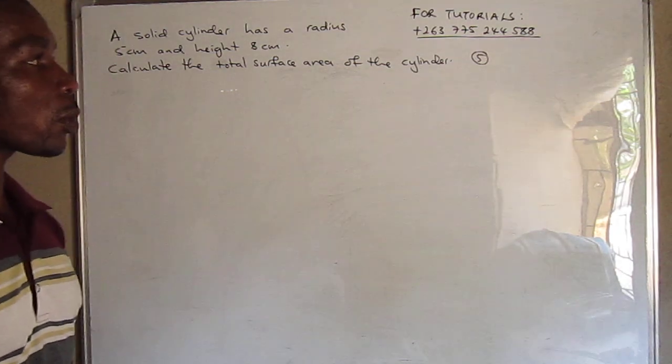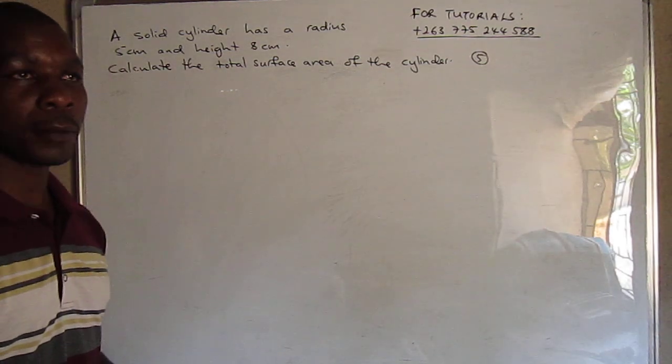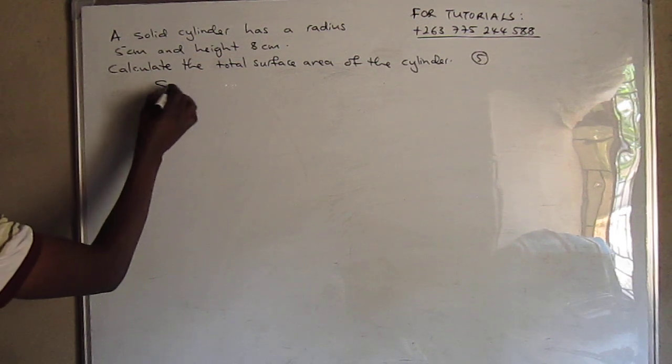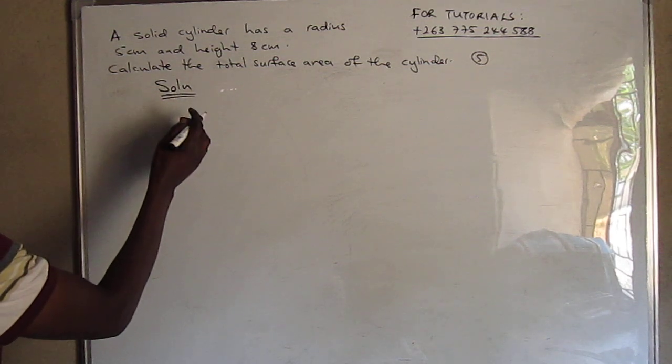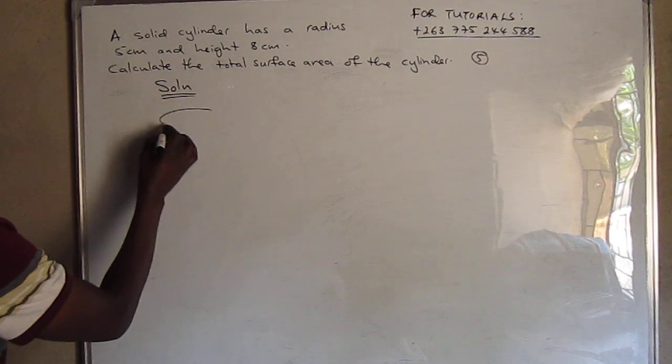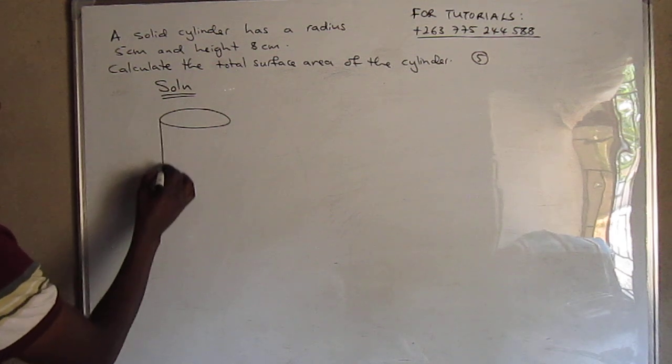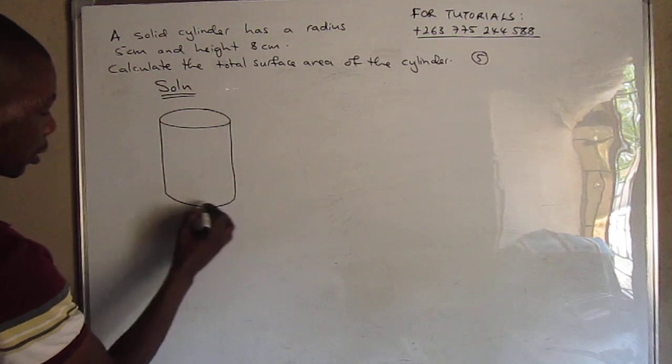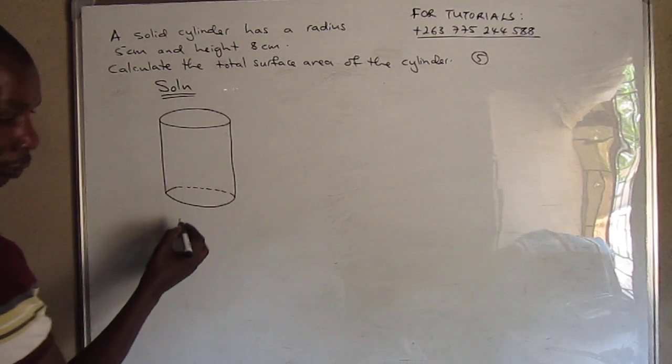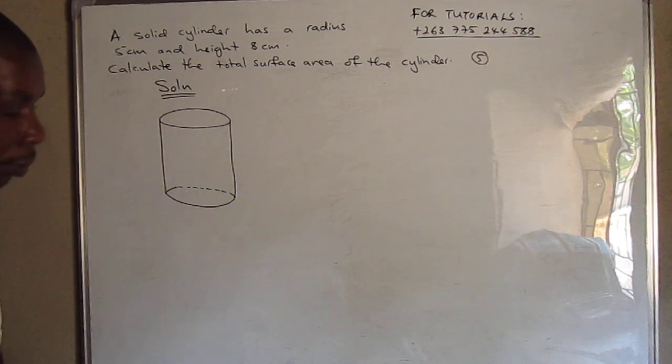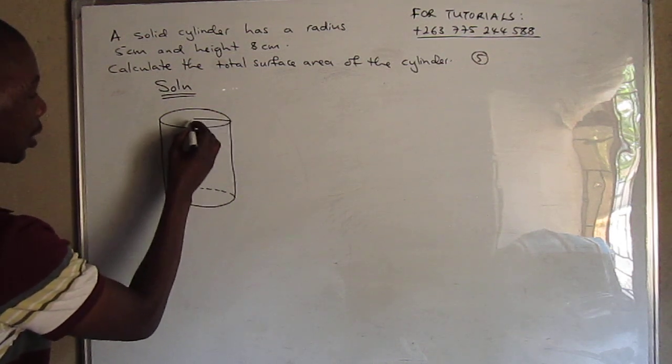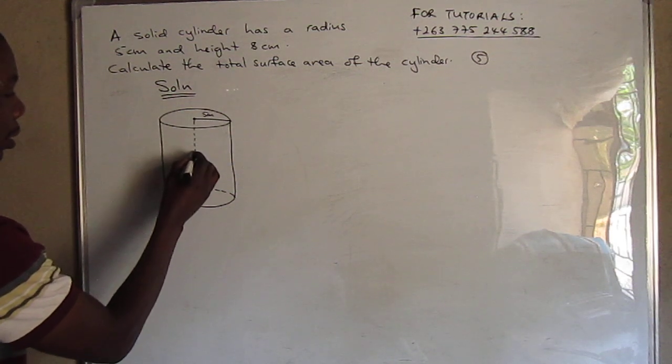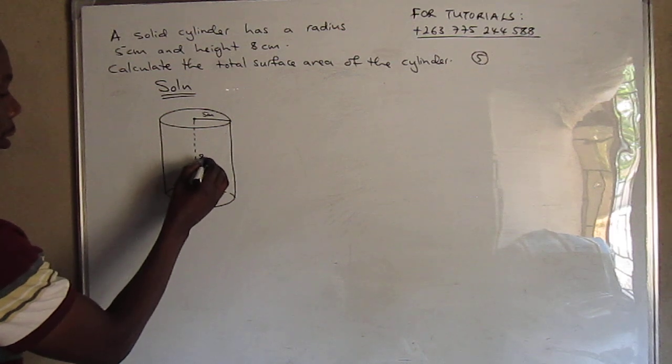My online lessons are conducted on Google Meet or Zoom Meeting. So let's go back to our question. We have a solid cylinder. A cylinder is of this form. So this is a cylinder of radius 5 cm and height 8 cm.